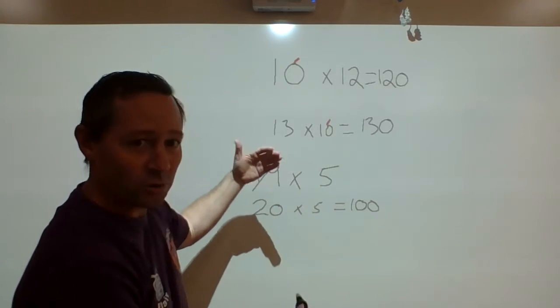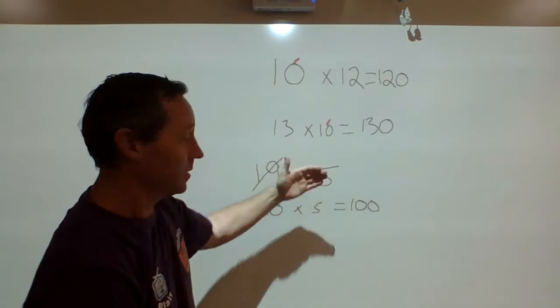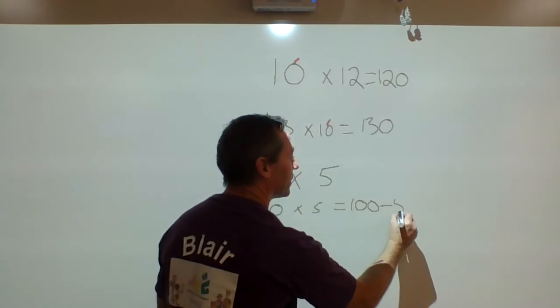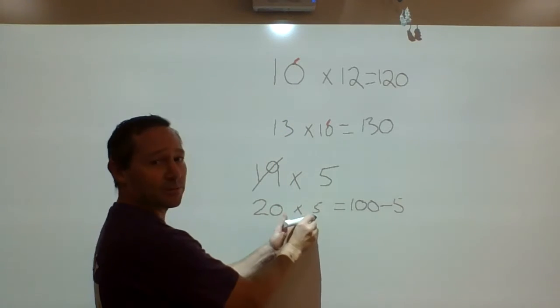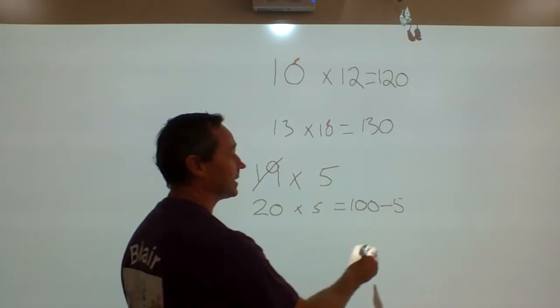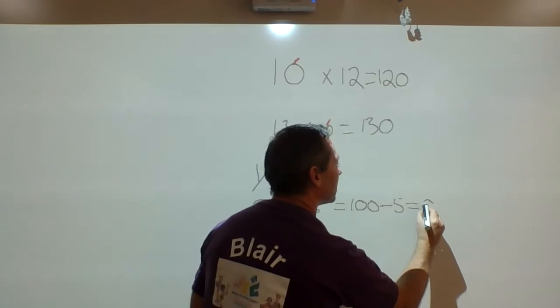Now my original question was 19 times 5, so I have to minus one set of 5. I did 20 times 5 to help me get this answer, but then I have to take 5 back off because I'm only doing 19. So my answer would be 95.